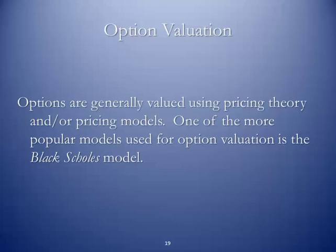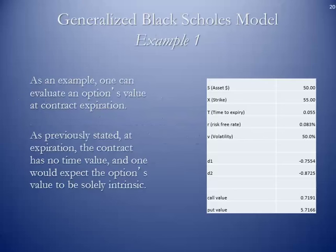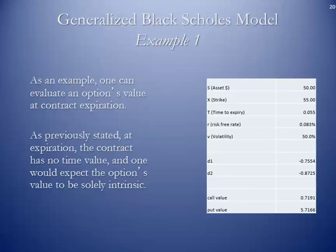How do they come up with premiums? Options are generally valued using pricing theory and/or pricing models. One of the more popular models used for option valuation is the Black-Scholes model. Some of the large firms that actually buy and sell options — they'll write options — may have proprietary models developed by quantitative analysts. Here is what the inputs look like on a Black-Scholes model. One can evaluate an option's value at contract expiration; at expiration, the contract has no time value and one would expect the option's value to be solely intrinsic. I've put an Excel spreadsheet out in Angel under the Lesson Resources as an example of the Black-Scholes model.